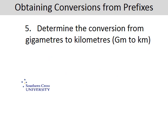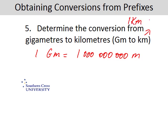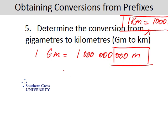And the last question, we need to get a conversion from gigameters to kilometres. Giga means billion, so we know that one gigameter is equal to a billion metres. We also know that one kilometre is equal to — kilo means a thousand — a thousand metres. So if we group like this, those three zeros and metres represent a thousand metres, which we can think of as being one kilometre. So we now have one gigameter equaling a million kilometres.